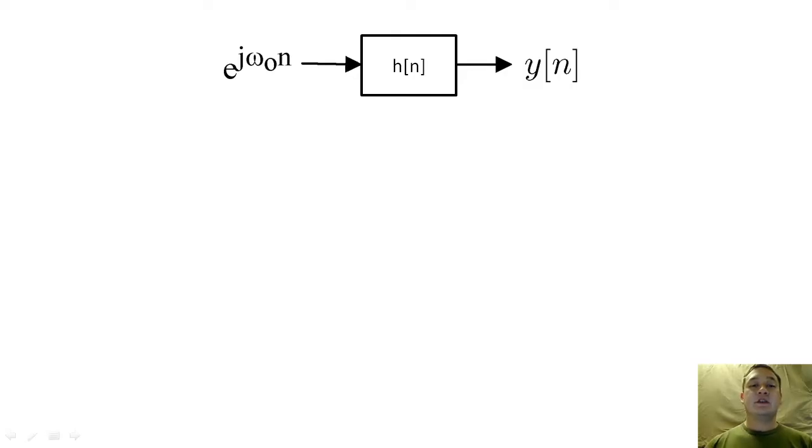If x of n is complex-valued, then I can take the form of a summation of e^(jω₀n) terms.